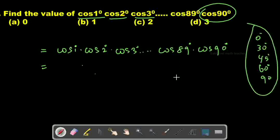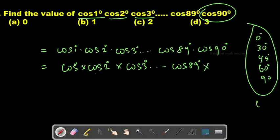We don't know cos1°, cos2°, cos3°, or even cos89°, but we do know cos90° from the trigonometric table. cos90° equals 0, and 0 multiplied by anything equals 0.